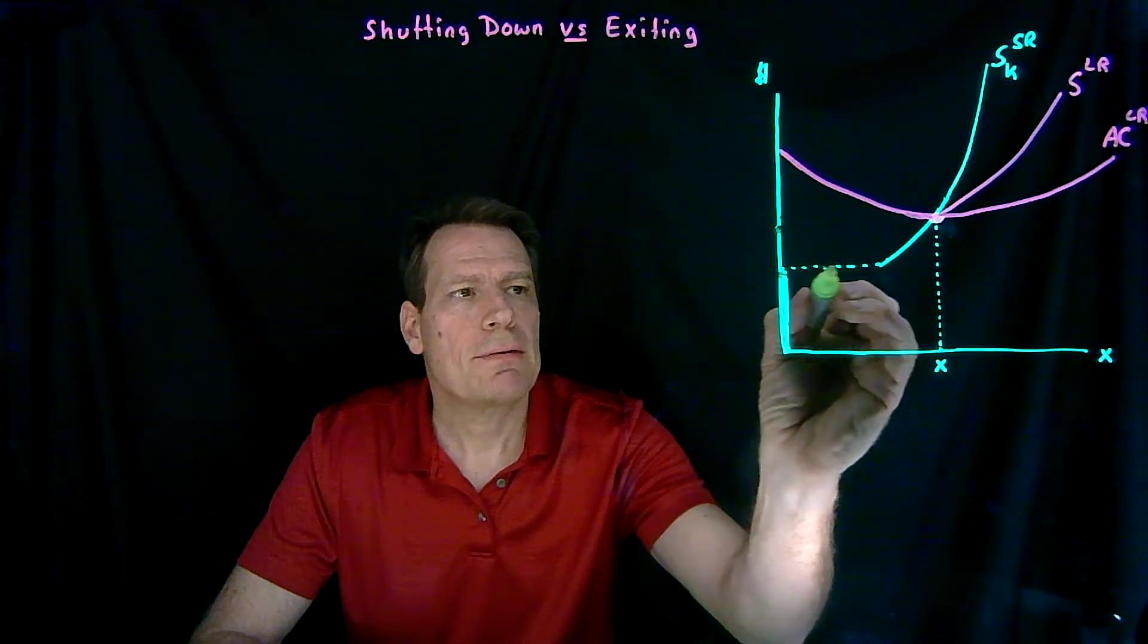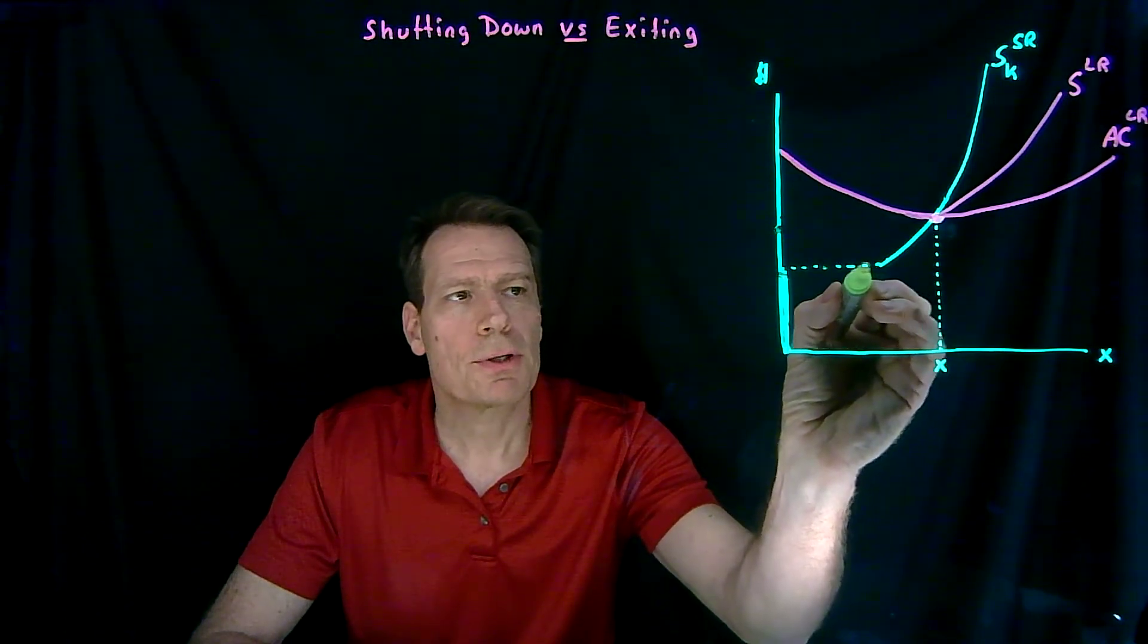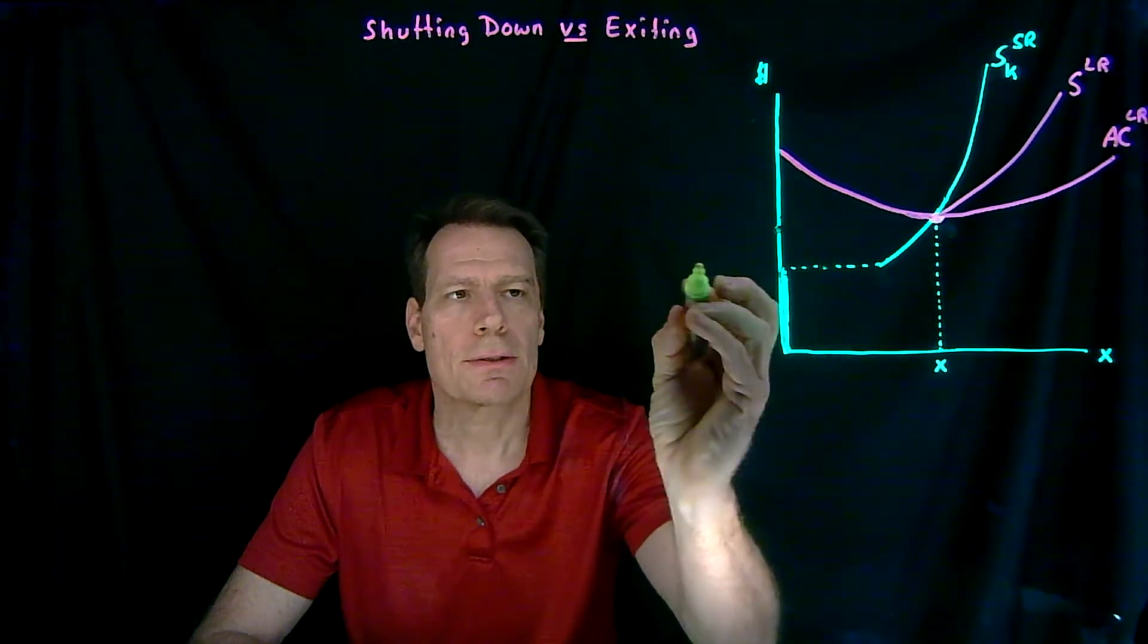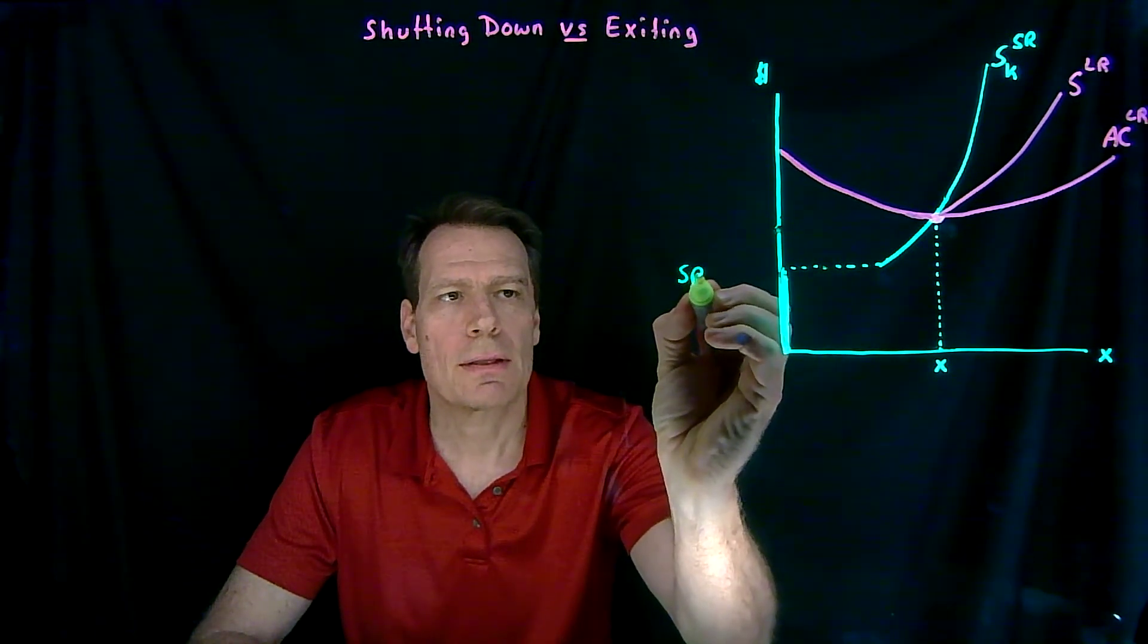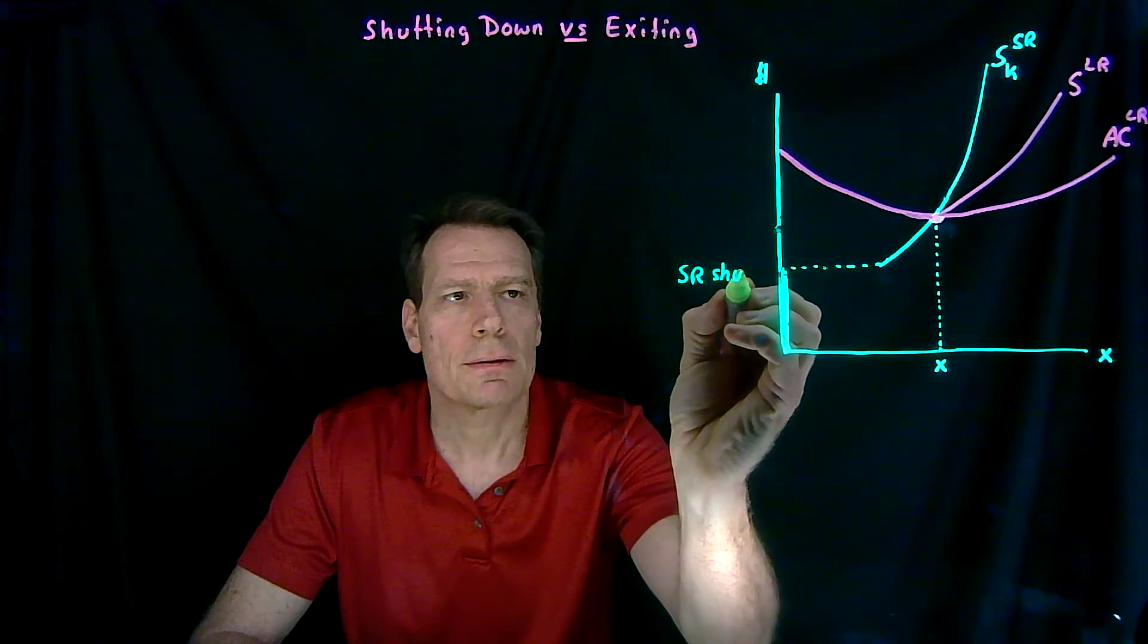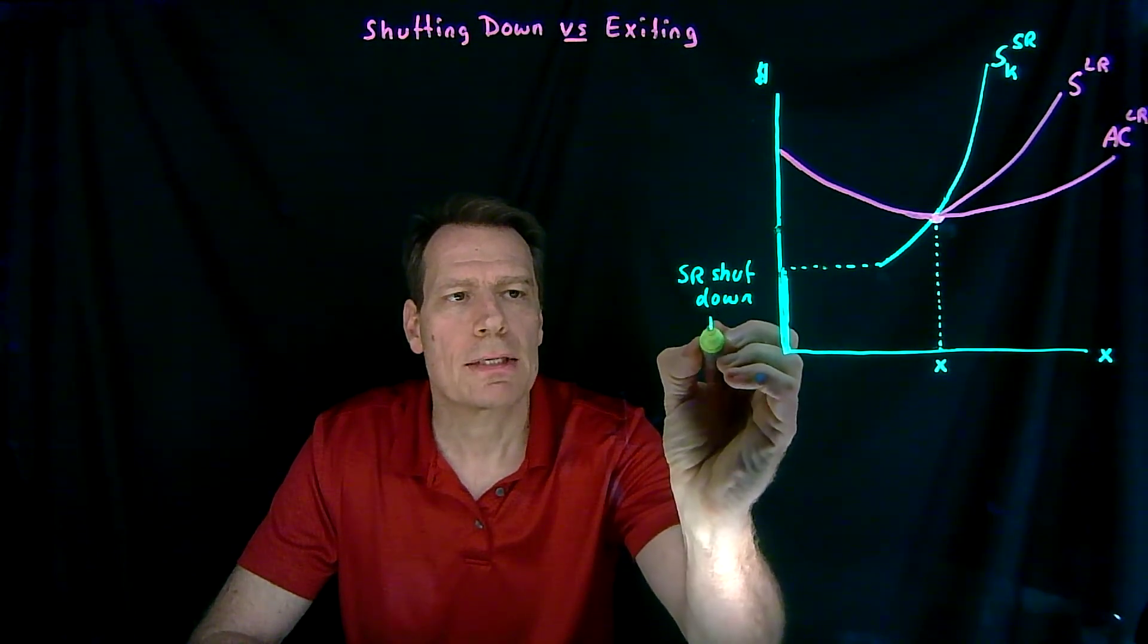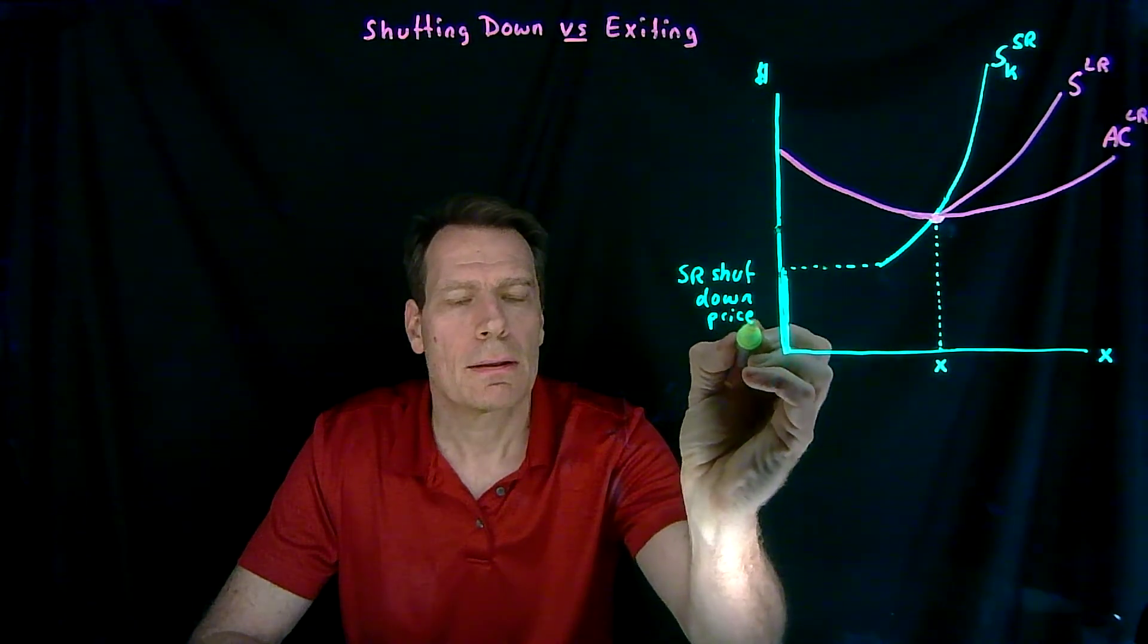At this break-even price, the firm will simply shut its doors and stop producing. But in the short run, it still exists. So this is the short-run shutdown price. It's simply the break-even price in the short run.